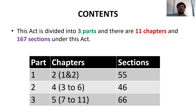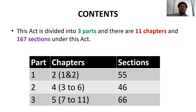The act is divided into 3 parts with 11 chapters and 167 sections. Part 1 has chapters 1 and 2 with 55 sections. Part 2 has chapters 3 to 6 with 46 sections. Part 3 has chapters 7 to 11 with 66 sections.